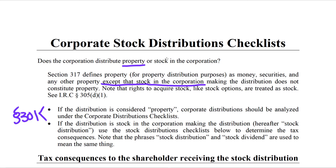However, if you have a stock distribution — stock in the corporation making the distribution — you're going to use the corporate stock distributions checklist. Note that stock rights or rights to acquire stock, like stock options, are treated as stock for purposes of the stock distribution checklist. So if you have a stock option or right to acquire stock in the future, you use the corporate stock distribution checklist, not the property checklist.